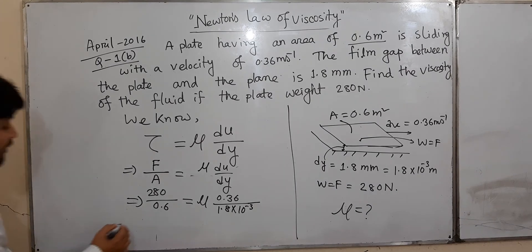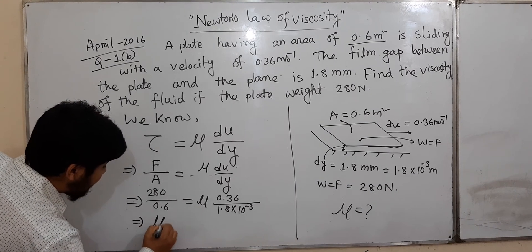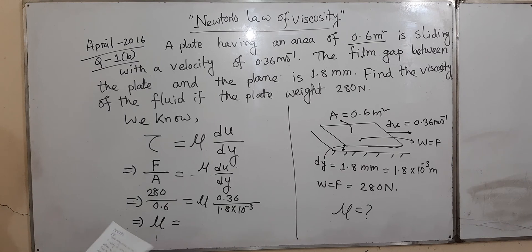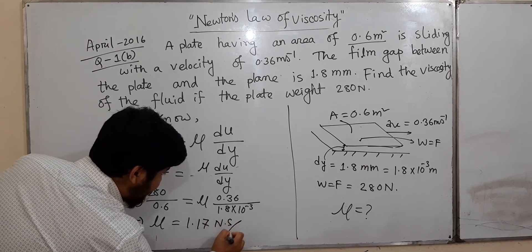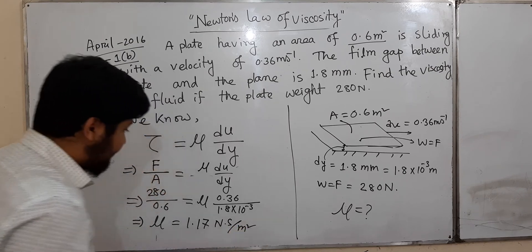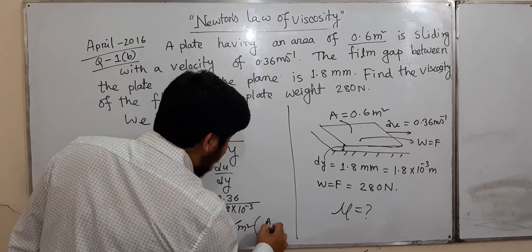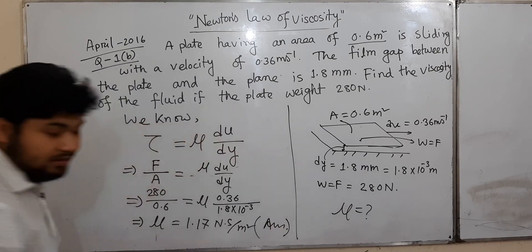Calculating μ, we get 1.17 newton-seconds per square meter. This is the viscosity μ.